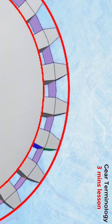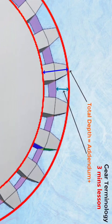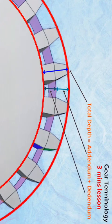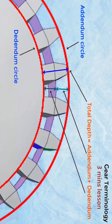Total depth. The distance from the top land of the tooth to the bottom of the tooth is known as the total depth of the tooth. Total depth can also be given as the sum of the addendum and dedendum of a gear. It is the distance between the addendum circle and the dedendum circle measured along the radial direction.